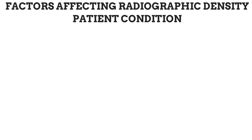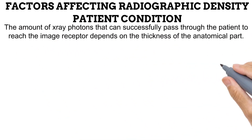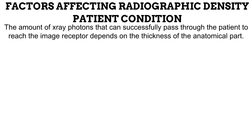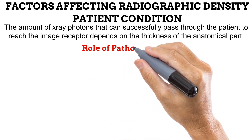The next factor influencing radiographic density is the condition of the patient. The amount of X-ray photons that can successfully pass through the patient to reach the image receptor depends on the thickness of the anatomical part. When a patient with a thick anatomical part is radiographed, less photons reach the image receptor because the thick part absorbs most of them, producing an image with less radiographic density. The reverse is true for patients with thinner parts, which is why different exposure factors are used for different patients and anatomical parts.